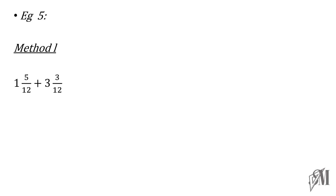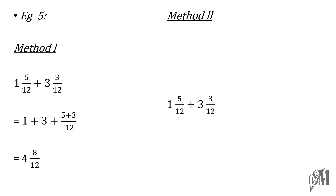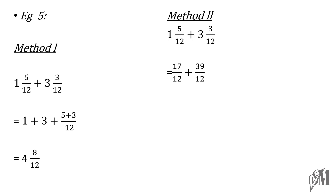Let us look into some examples. This is example 5. Under method 1, you add the whole numbers separately and the fractional parts separately. So, it becomes 1 plus 3, plus 5 over 12 plus 3 over 12, that is 4 and 8 over 12. Under the second method, you convert both mixed numbers to improper fractions, getting 17 over 12 and 39 over 12. When you add, you get 56 over 12. Since 56 over 12 is an improper fraction, you convert it to the mixed number 4 and 8 over 12.